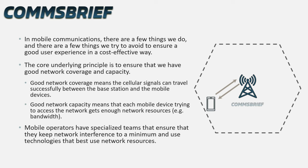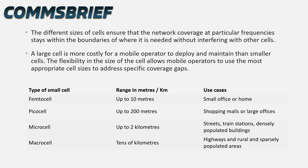In mobile communications, there are a few things we do and a few things we try to avoid to ensure a good user experience in a cost-effective way. The core underlying principle is to ensure good network coverage and capacity. Good network coverage means cellular signals can travel successfully between the base station and mobile devices. Good network capacity means each mobile device gets enough network resources, for example bandwidth. Mobile operators keep network interference to a minimum and use technologies that best utilize network resources. The different sizes of cells ensure that network coverage at particular frequencies stays within the boundaries where it is needed without interfering with other cells.